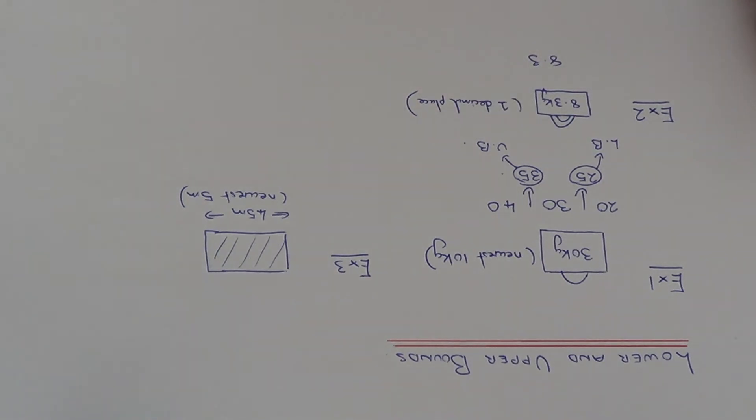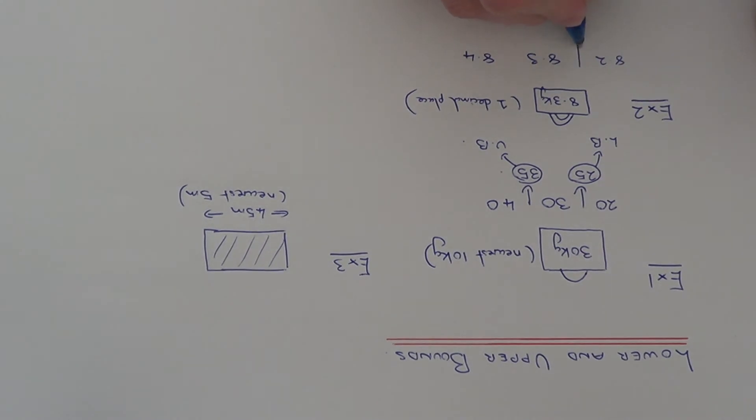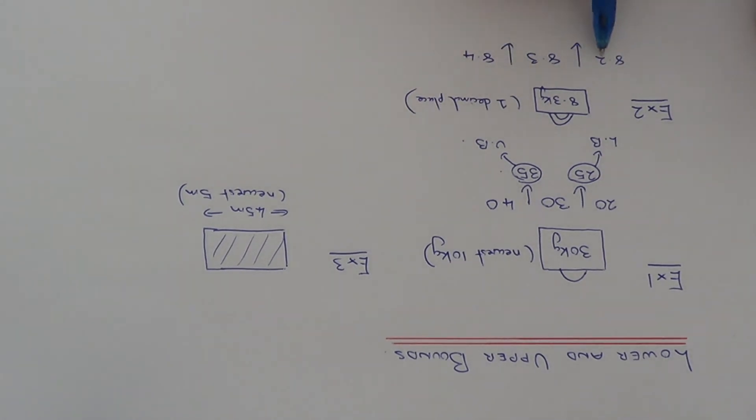The value above 8.3 on our scale would be 8.4. The value below 8.3 would be 8.2. So again just take the halfway points. So halfway between 8.2 and 8.3 is 8.25. Halfway between 8.3 and 8.4 is 8.35.